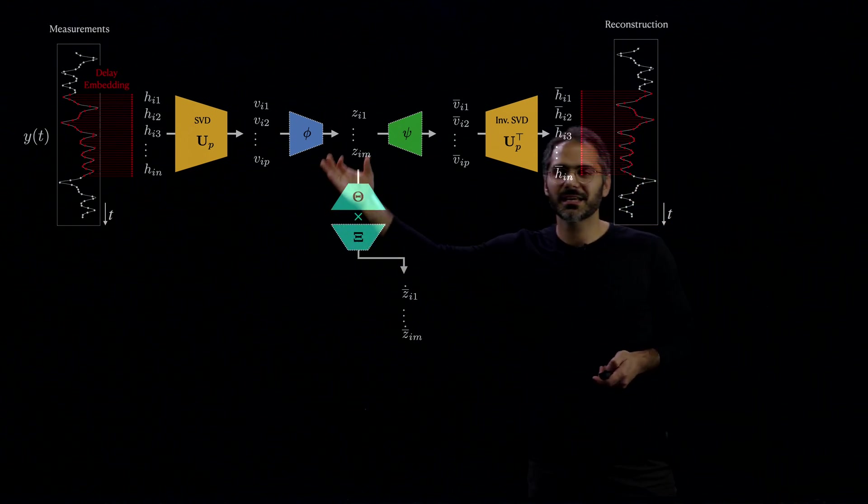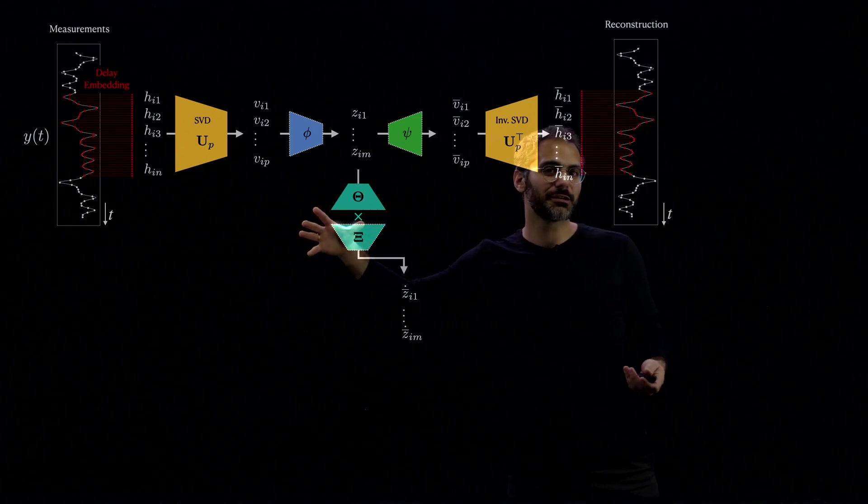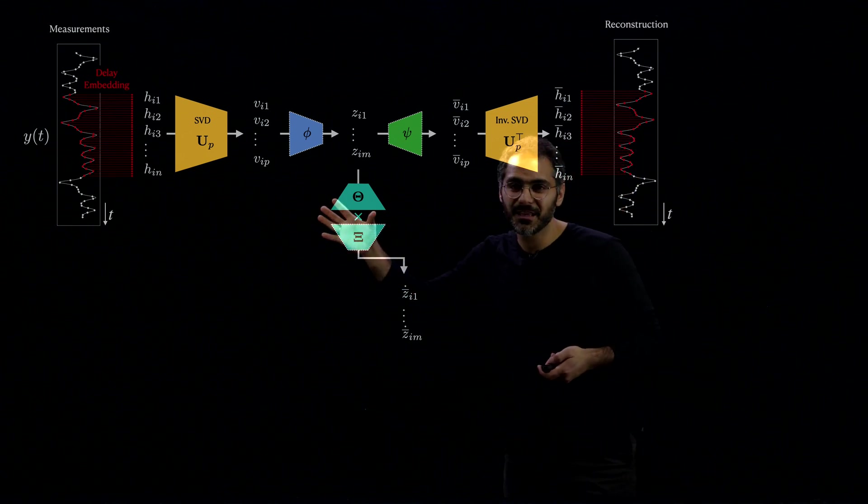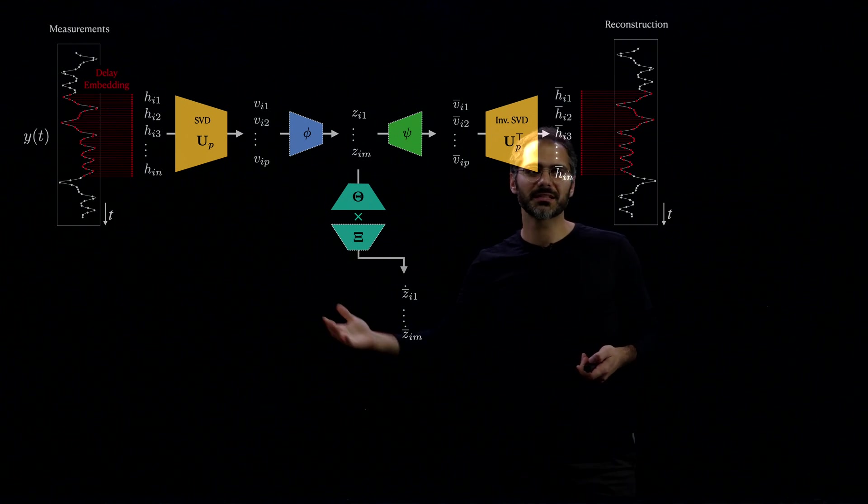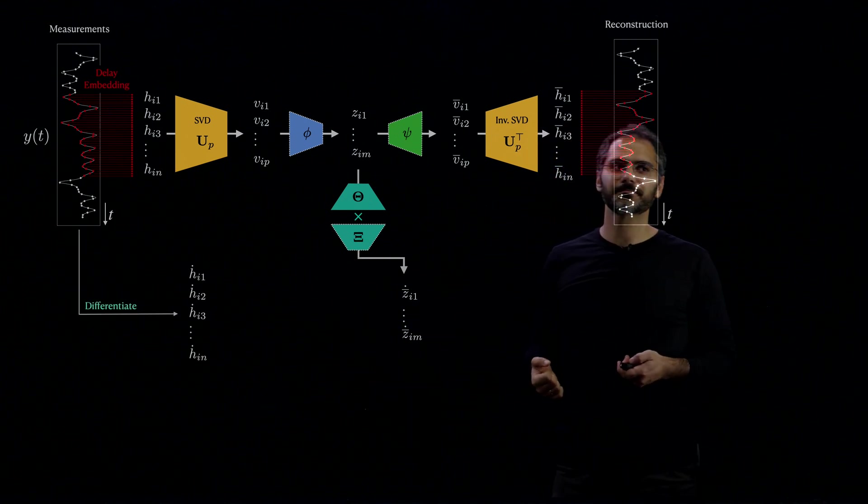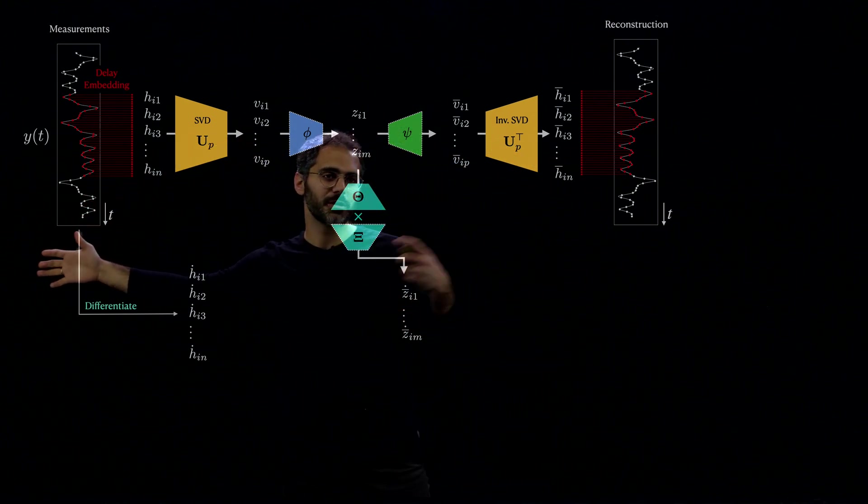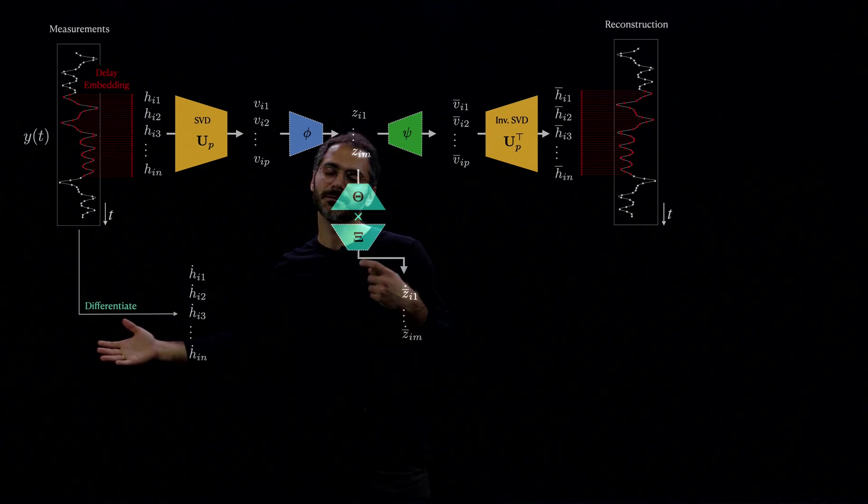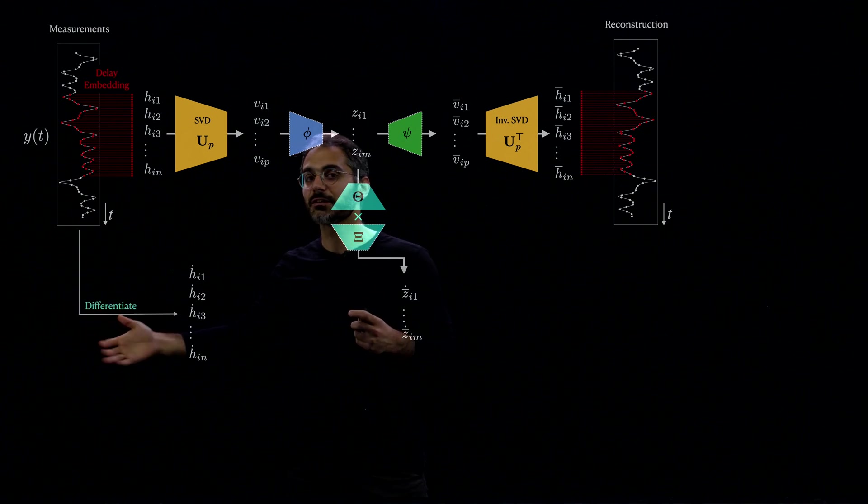Now, the SINDy part is taking Z and projecting it on a higher dimensional space by defining this dictionary, potential terms in our differential equation, and then multiplying it by this unknown function C that we're also optimizing for to get z-dot. Now, we can also go back to H to constrain our model even further.